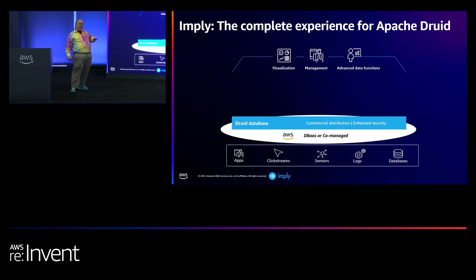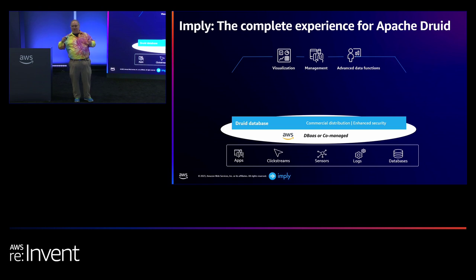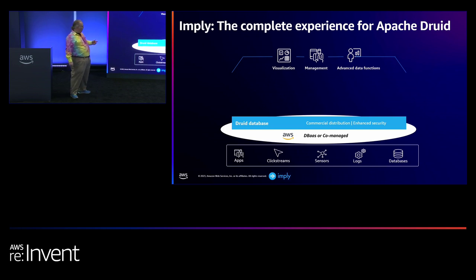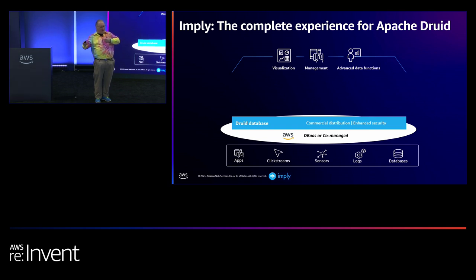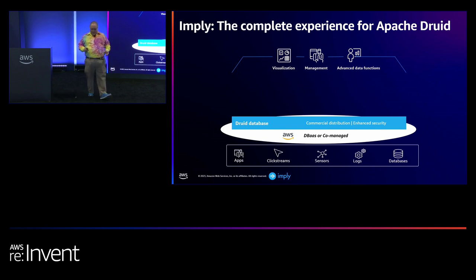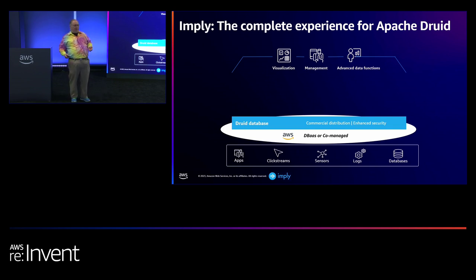Open-source Druid is the fully functional version of Druid — it's not a crippled open-source version where the good version requires payment. But if you choose to pay us, there are additional things we offer. One is a commercial distribution with enhanced security. When you use open source, you have to install all the dependencies yourself. If you buy the Imply version, it's all prepackaged, plus we add extra security pieces that are commercial, not open-source.